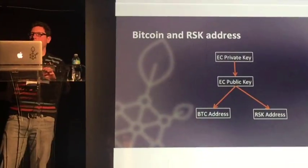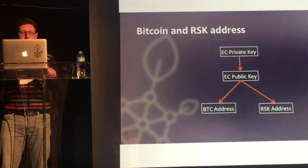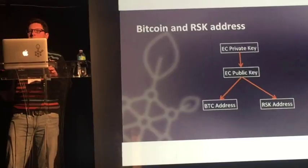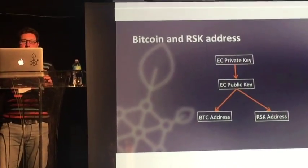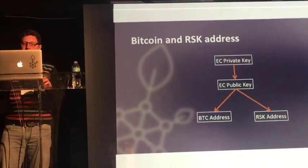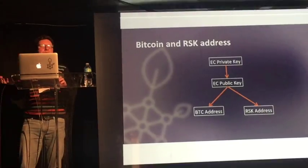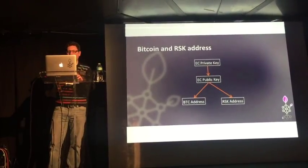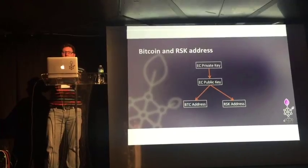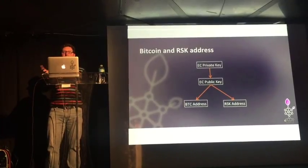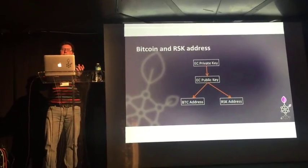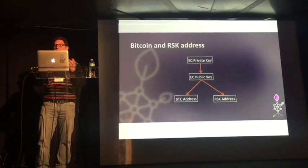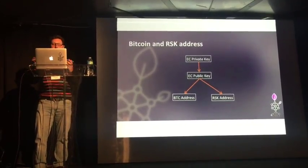We use elliptic curve cryptography. So if you have a private key, which generates a public key and a Bitcoin address, you can use the same public keys to generate an RSK address. You will need to copy your private key from your Bitcoin node to your RSK node to do the two-way peg.